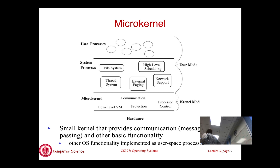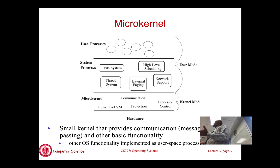Parts of the microkernel that run in user space do not get direct access to hardware — all hardware access goes through the microkernel. The microkernel still arbitrates hardware access for protection. Its job is to provide protection, low-level resource access, and inter-process communication. Everything else runs outside the kernel.